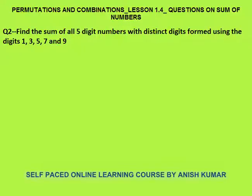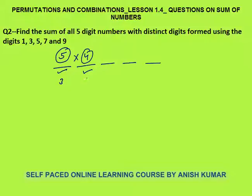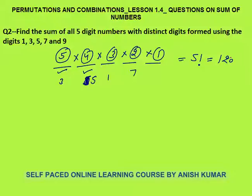Question 2: find the sum of all 5-digit numbers with distinct digits formed by using the digits 1, 3, 5, 7 and 9. We have to use all 5 digits to make distinct numbers. Total numbers: the first place can be filled in 5 ways, second in 4, third in 3, fourth in 2, fifth in 1 — that is 5 factorial = 120 numbers.